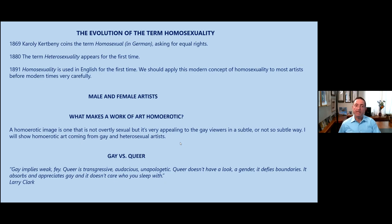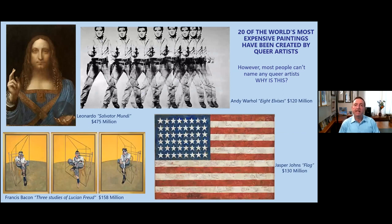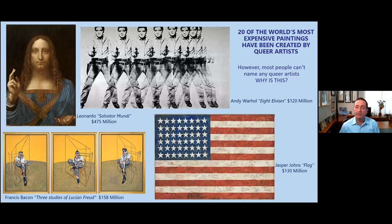If you do some research, you'll find out that 20 of the world's most expensive paintings were created by queer artists. For instance, the most expensive painting in history by Leonardo da Vinci, the Salvatore Mundi, recently sold for $475 million. The Eight Elvises by Warhol for $120 million, The Flag by Jasper Jones for $130 million, and a painting by Francis Bacon that sold for $158 million. However, if you ask people in the street, as I did in the research for my documentary, if they could name any gay artists, 90% were really hard pressed to name one or more.